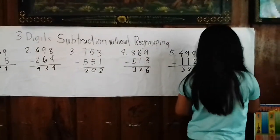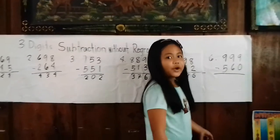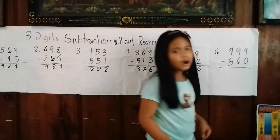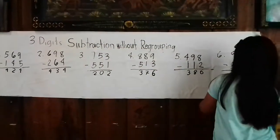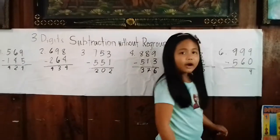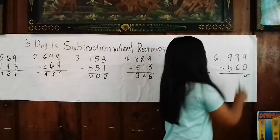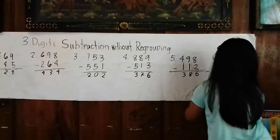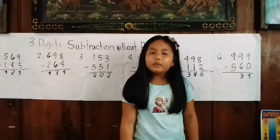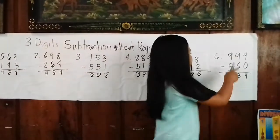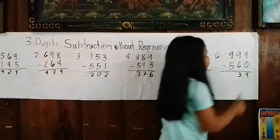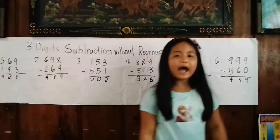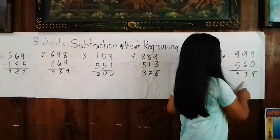Number 6: 999 minus 560. First, we subtract the ones place. 9 minus 0 equals 9. Now we will subtract the tens place. 9 minus 6 equals 3. Now we will subtract the hundreds. 9 minus 5 equals 4. So the answer is 439.